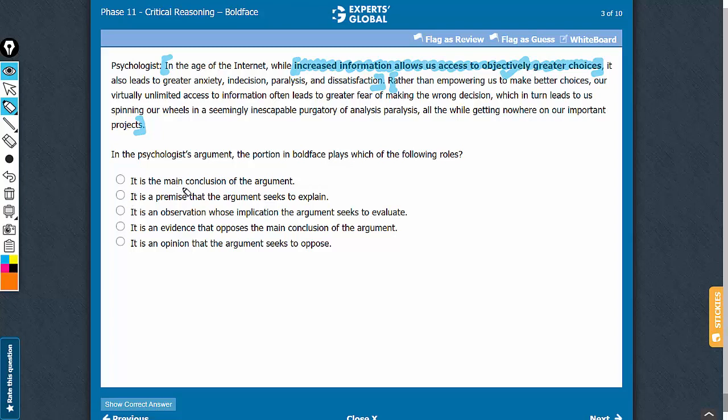Answer choice A is very interesting. Many students will choose this. No, this is not the main conclusion. All of this from here to here is the main conclusion. To say that increased information allows us access to objectively greater choices alone is not the conclusion. The conclusion needs to cover both aspects, the aspect of having greater choices, but then also having greater anxiety, indecision, paralysis, and dissatisfaction.